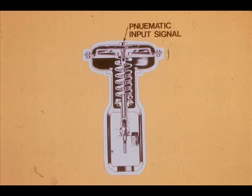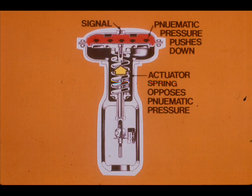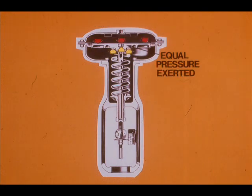The actuator operates as follows. The pneumatic signal, usually from 3 to 15 pounds, enters the upper diaphragm case. It forces the diaphragm down, opposing the spring. The actuator will move until the pressure on the diaphragm and the spring force are equal.